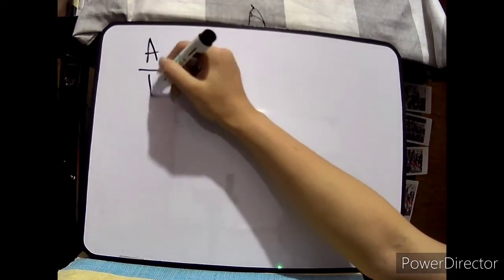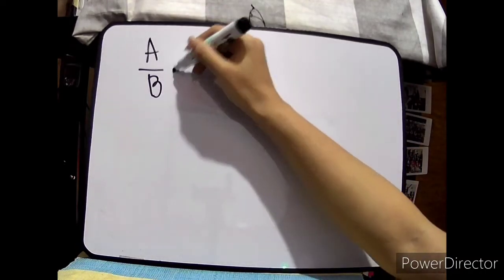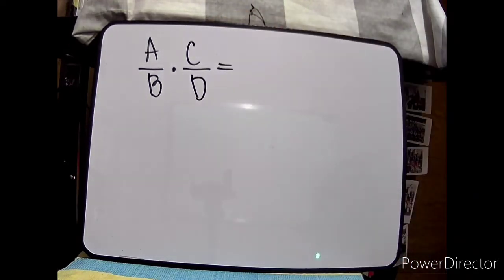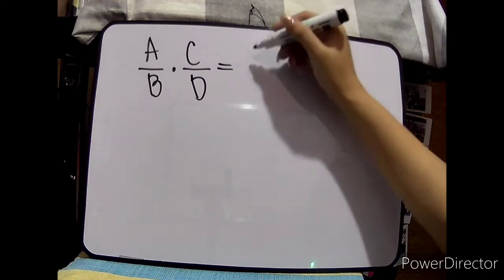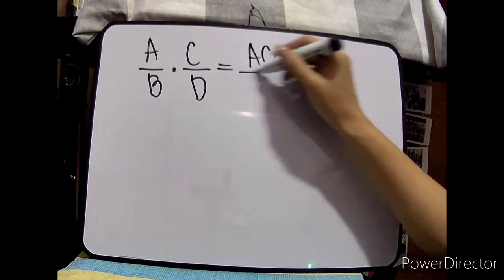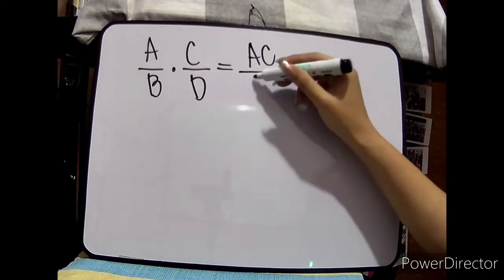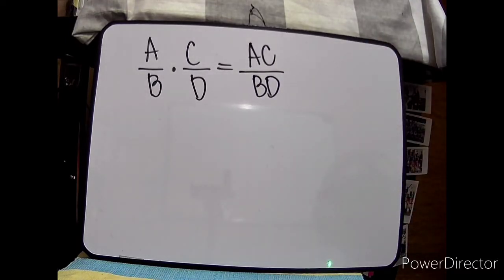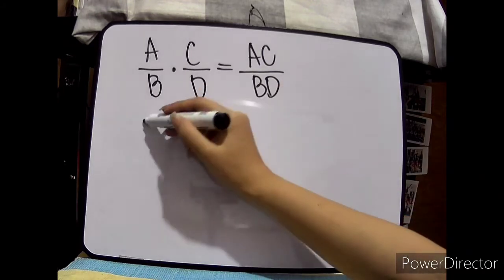When we multiply fractions, given that a over b times c over d — don't worry, those letters just represent numbers — we multiply numerator to numerator and denominator to denominator. So a times c is ac, and b times d is bd. If you multiply fractions, multiply numerator to numerator and denominator to denominator.